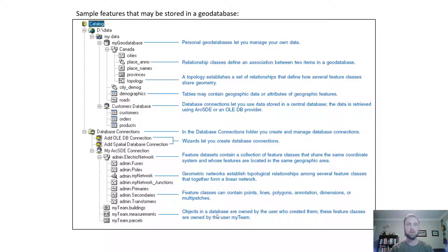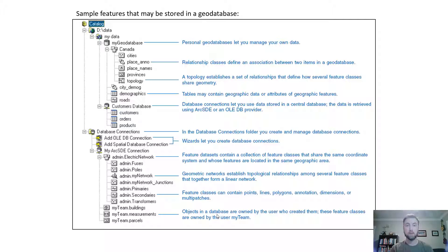This is a quick example of all the different geographic, spatial, and annotation data that can be stored in a geodatabase. Just looking at a few: place annotation, points, lines, polygons, topologies, tables, networks, and measurements. A fairly large number of different types of data can be stored in geodatabases. There are also different types of geodatabases — actual differences in the file formats themselves, which I'll explain shortly.